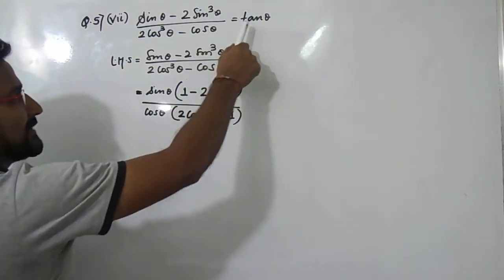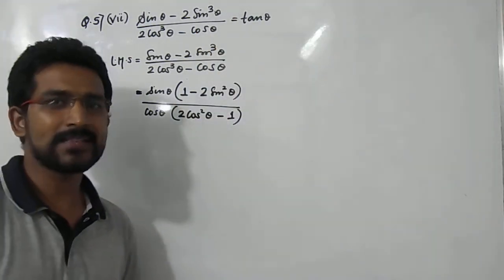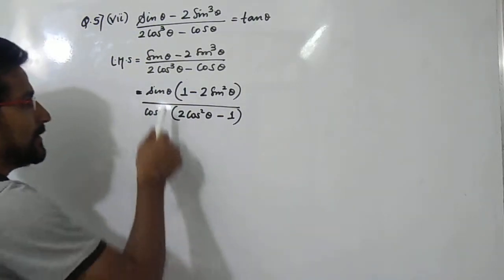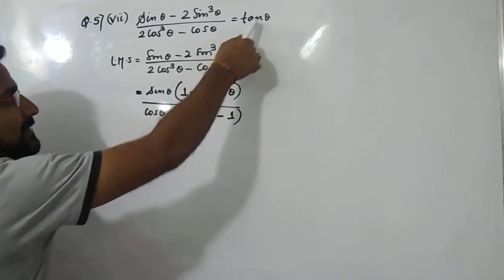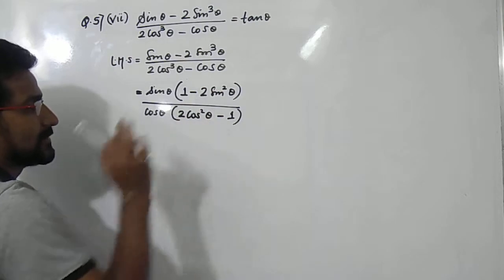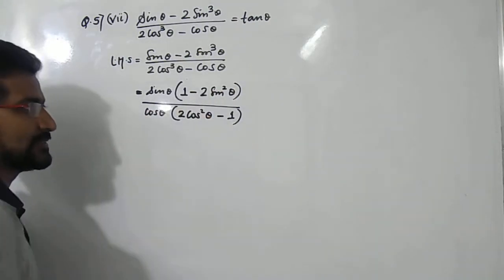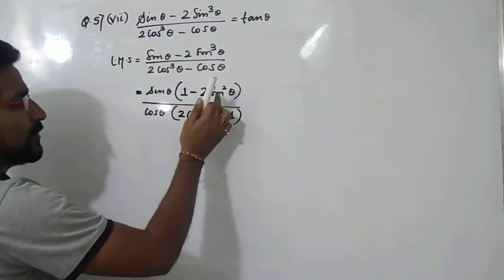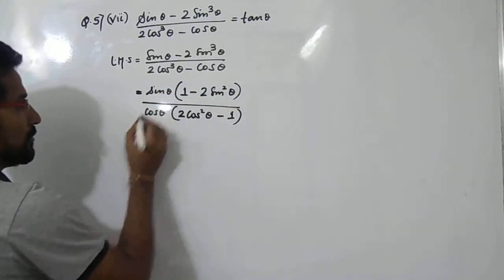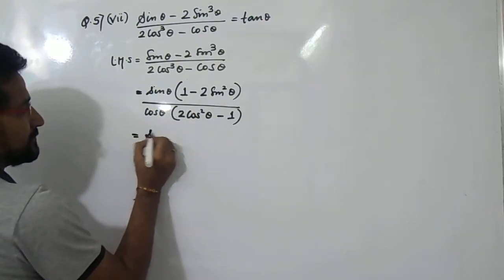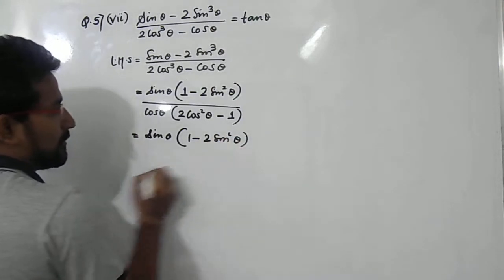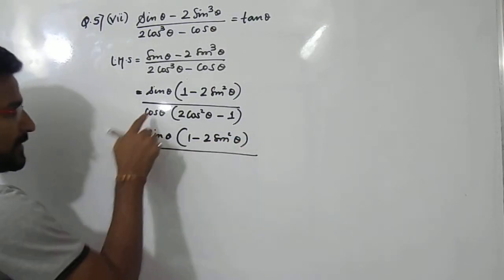In the RHS we want tan θ. What is tan θ? Tan θ is nothing but sin θ upon cos θ. So in the LHS we already have sin divided by cos, which equals tan. This means we need to cancel out the two bracket terms, so we need to make both bracket terms the same. Either convert sin in terms of cos, or cos in terms of sin.